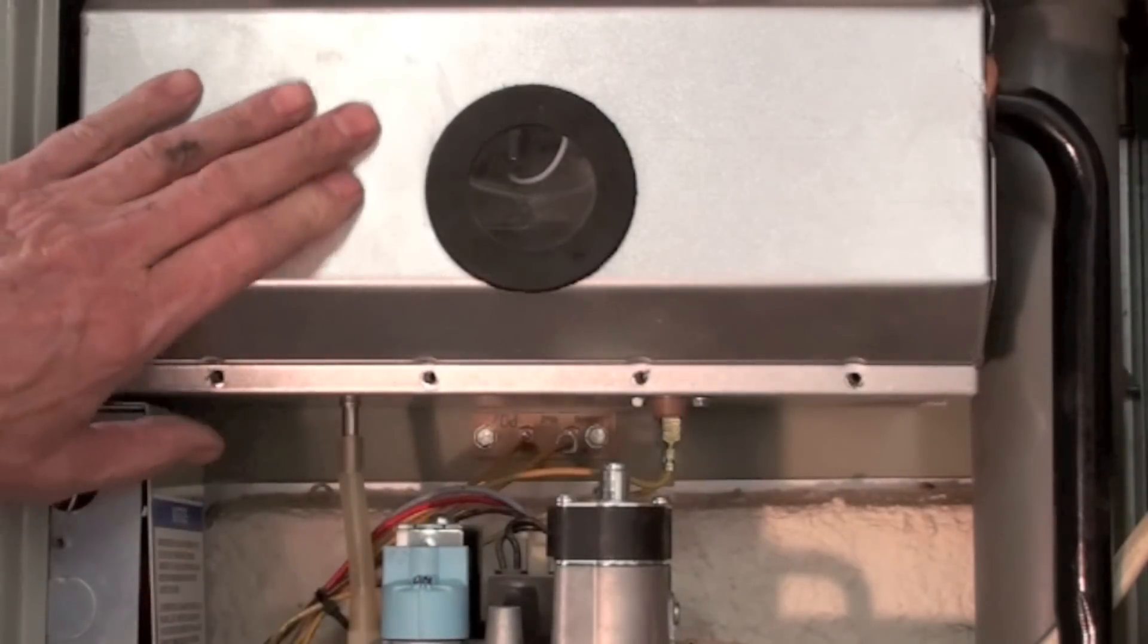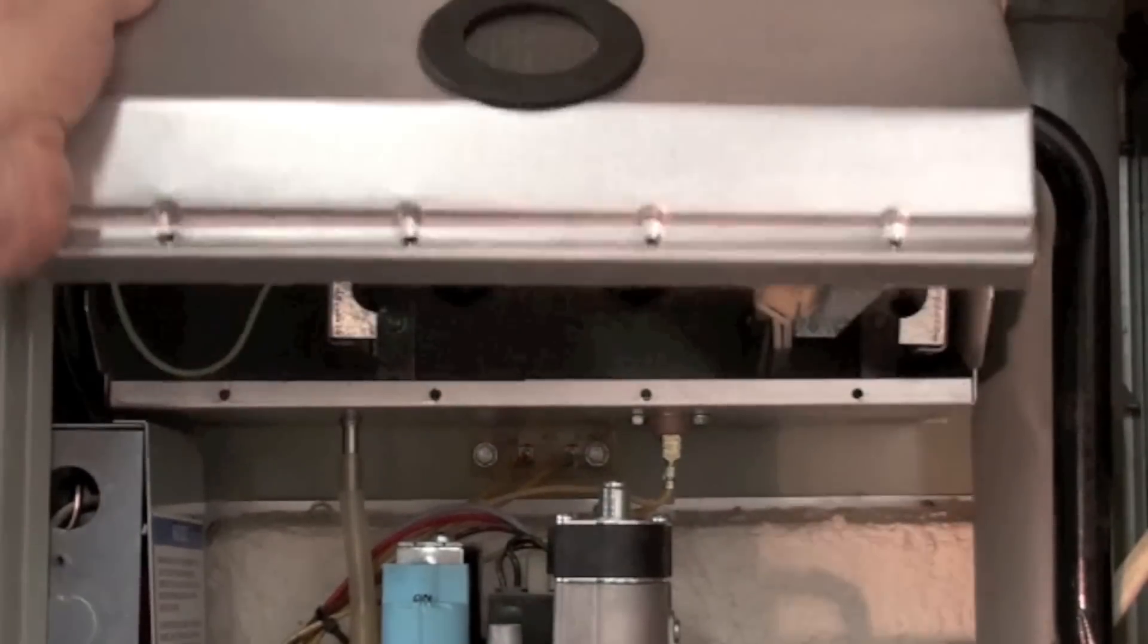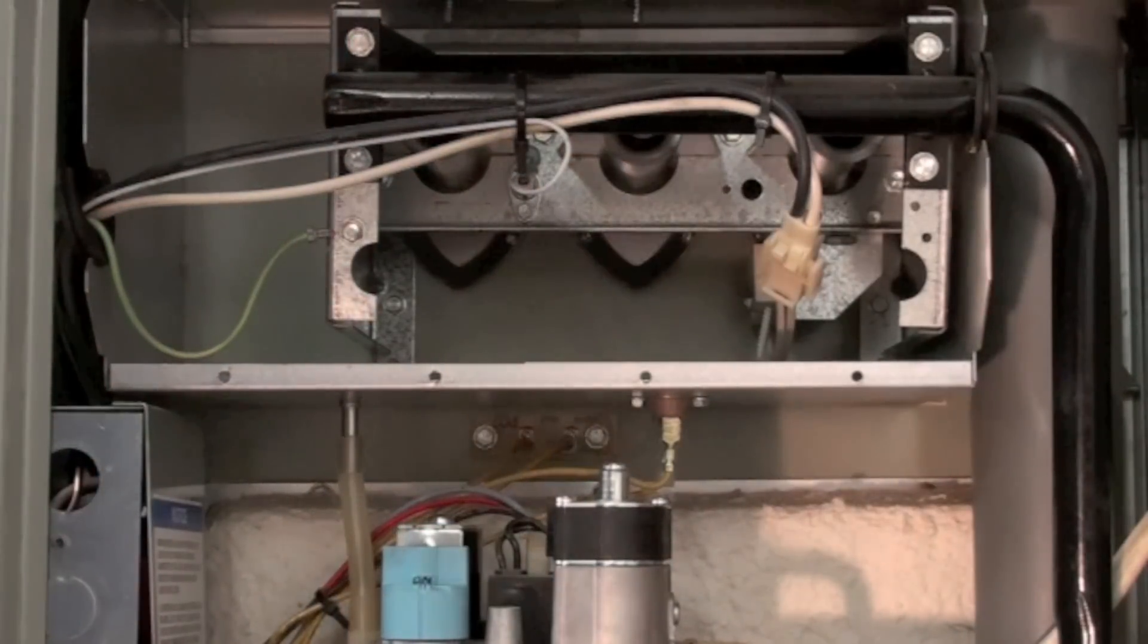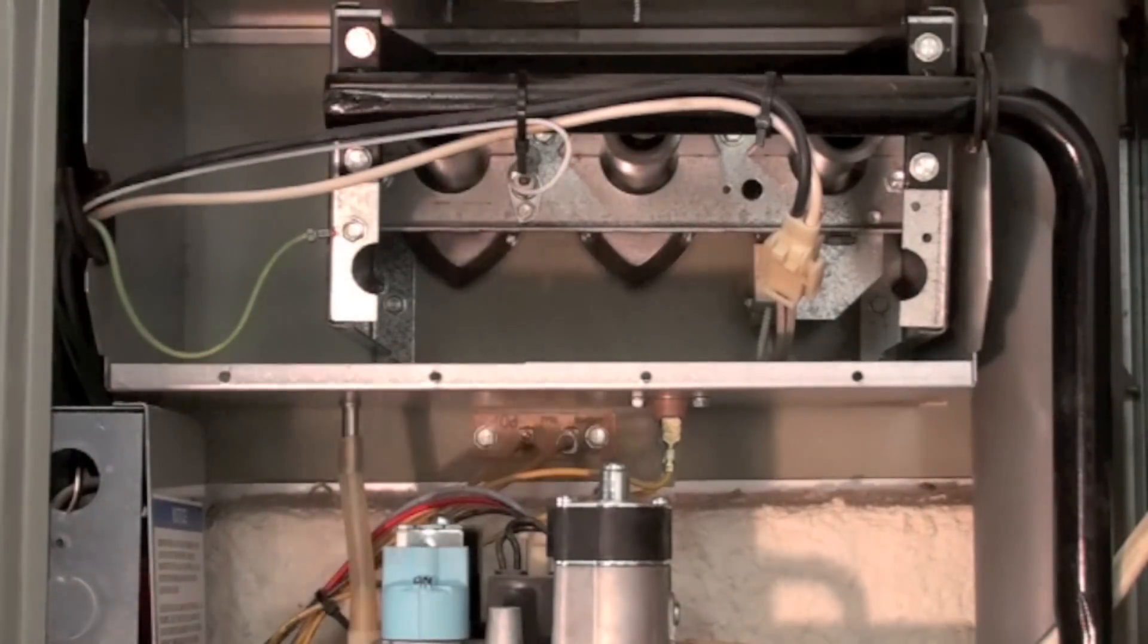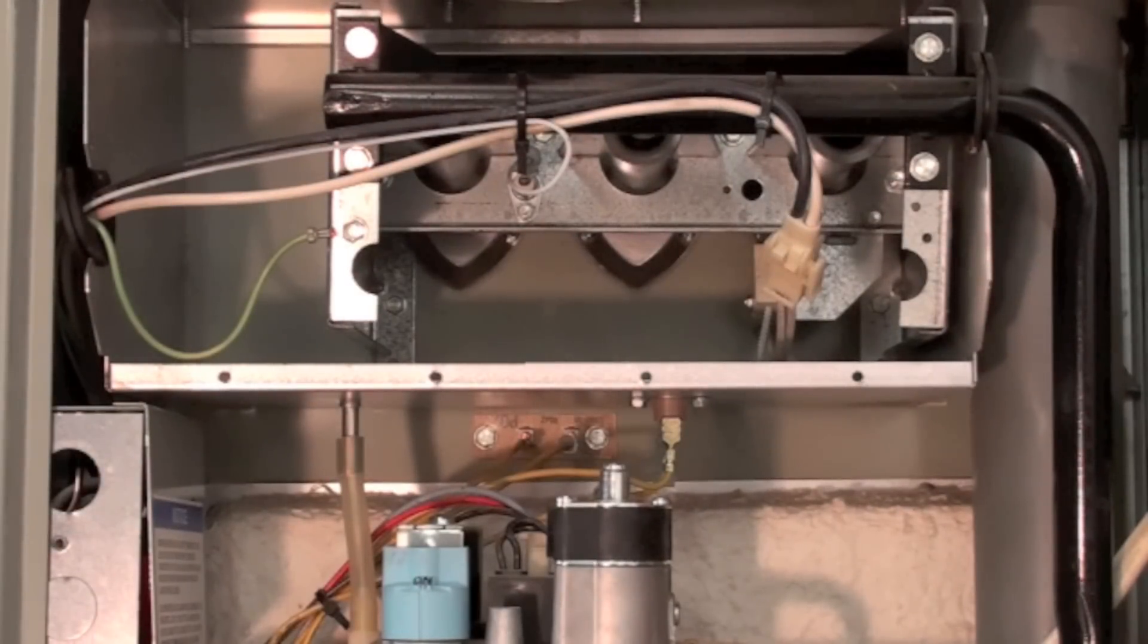Now underneath here are the burners. This is a 90 percenter. Your furnace may have burners that are visible without a cover and that will make it a little easier to see. However, the same thing happens.